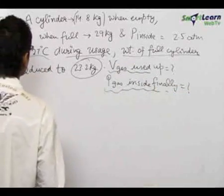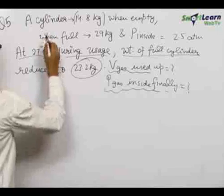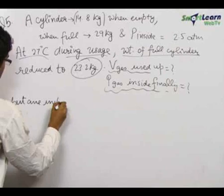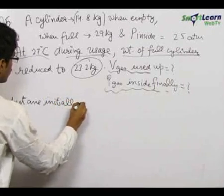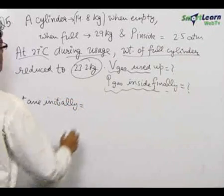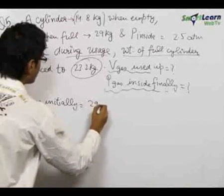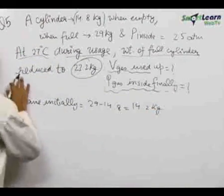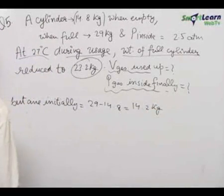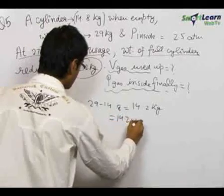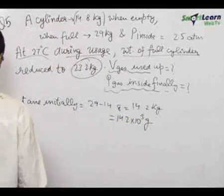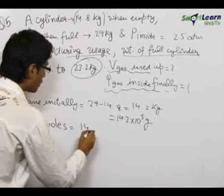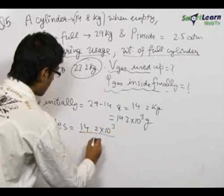First, let us find the weight of butane present initially. Butane initially equals the total weight of the cylinder minus the weight of the empty cylinder: 29 minus 14.8, which equals 14.2 kilograms. This is the weight of butane present inside the cylinder under initial conditions. The moles of butane present initially equals 14.2 into 10 power 3 grams divided by 58 grams per mole.